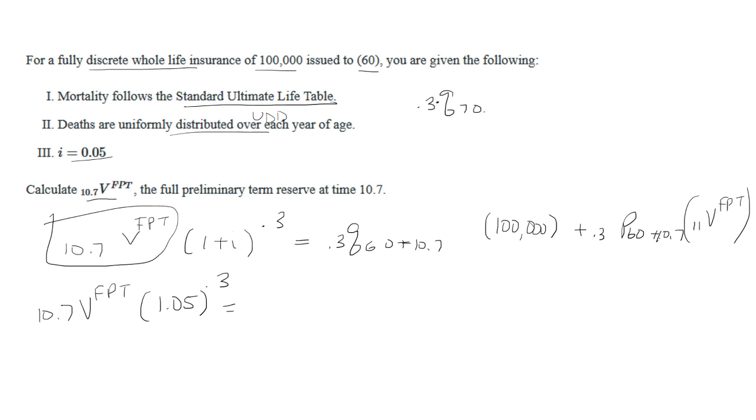For this one we're going to have to use again the UDD, so this will be 1 minus 0.3 times - so 0.3 times - now we're going to have L_71 over 0.3 L_70 plus 0.7 L_71. Actually, this one we don't really need the 0.3, so this is how we should treat it.